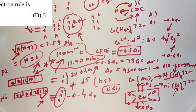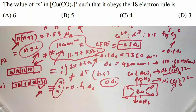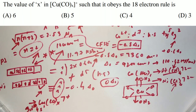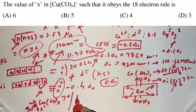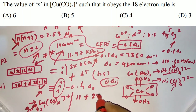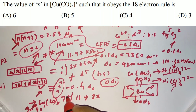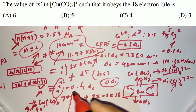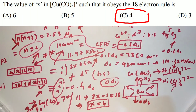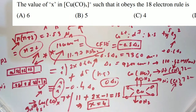The next question involves the 18-electron rule for Cu(CO)x⁺. Copper has the configuration [Ar] 3d¹⁰ 4s¹, giving 11 electrons total. Each CO donates 2 electrons, so x CO ligands contribute 2x electrons. With a +1 charge (−1 electron), the equation is: 11 + 2x − 1 = 18, giving x = 4. So the number of CO ligands is 4; option C is correct.